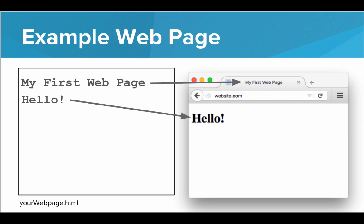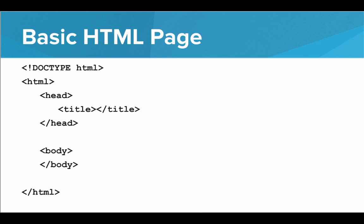It turns out HTML has plenty of tags that help us tell the browser where we want the text to go. We have tags that can define the structure of the HTML page. Here is the skeleton for a basic HTML page, and there's a lot going on here, so let's break this down tag by tag and see what each tag is doing.